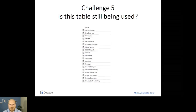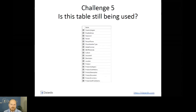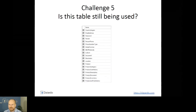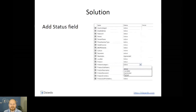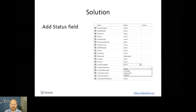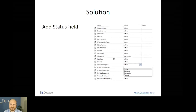Challenge number five: is this table still being used? You're going through the list of tables and wondering whether you can use it or whether it's still being used. Our solution: add a status field and provide it for every table. That way you know where in the lifecycle this table is right now. You can have multiple labels and define them yourself. In this case, you can see that the illustration table is deprecated — you shouldn't be using it anymore.